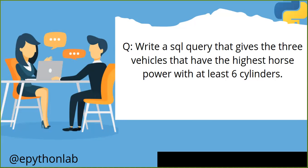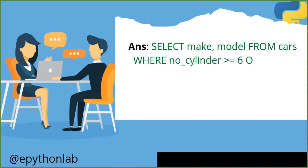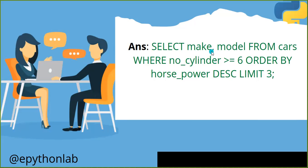The answer for this question: we should SELECT make and model FROM the cars table WHERE the number of cylinders is greater than or equal to six, because we need the vehicle model having at least six cylinders. Then ORDER BY horsepower in descending order, which means from the highest to the least. And finally, LIMIT 3 - this is the most important part - because you are asked to retrieve three vehicles from hundreds of thousands of records in the cars table.